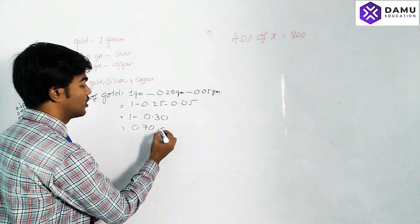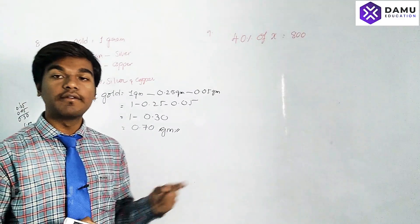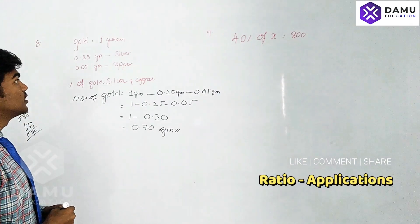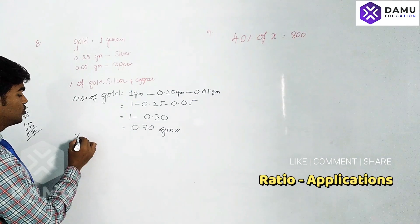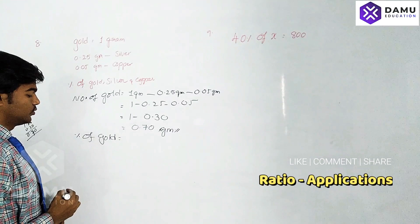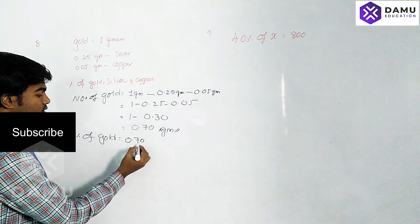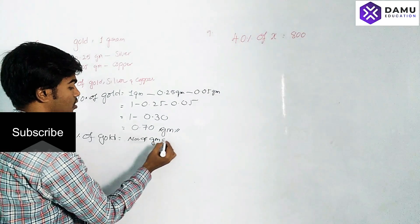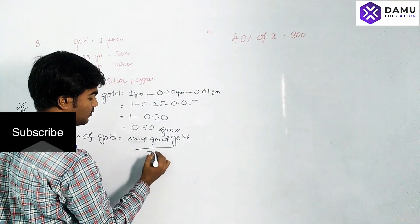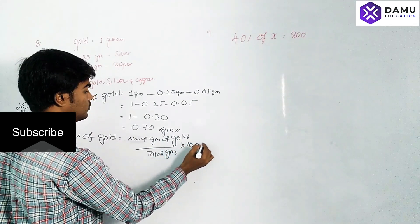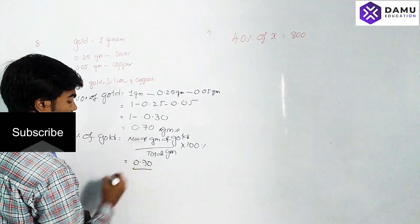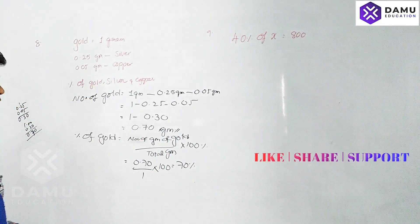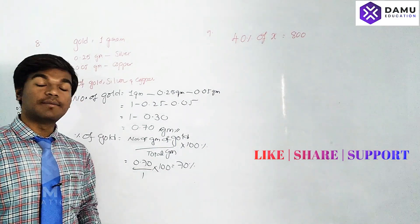So 0.70 grams of gold is there in every one gram of gold; the remaining 0.30 is copper and silver. Percentage of gold will be equal to number of grams of gold divided by total grams, multiplied by 100. So that is 0.70 by 1 into 100, which gives 70%. Percentage of gold is 70%.